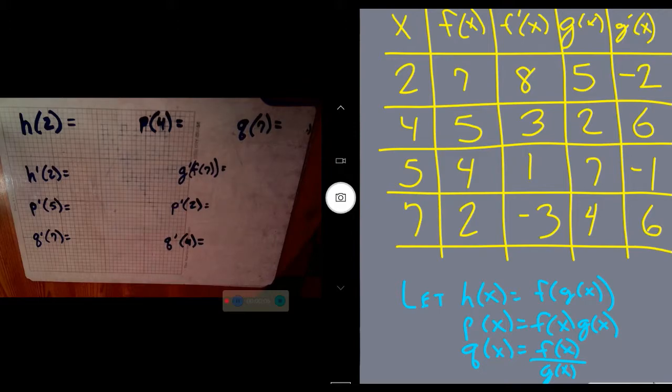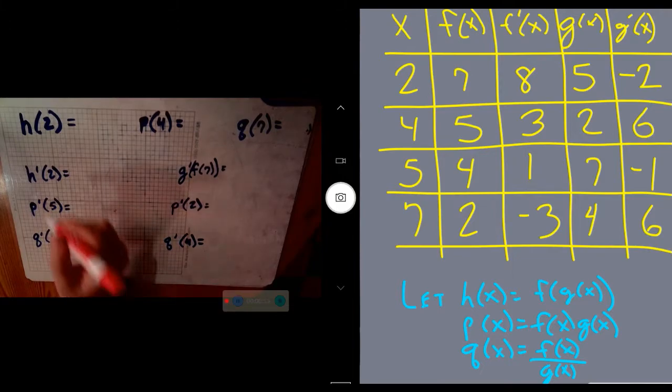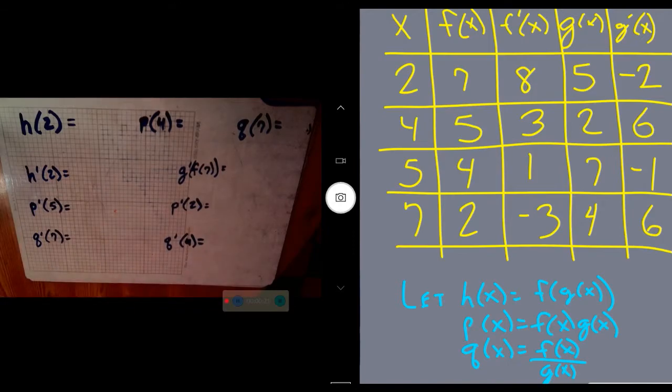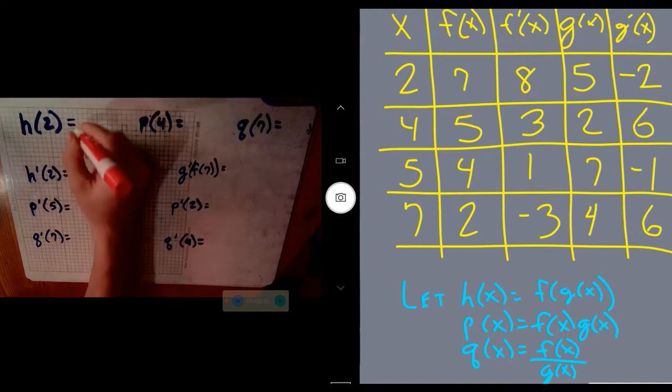All right, we're looking at using tables to find different values of derivatives using various rules. First, we have h, p, and q being defined as they are here: h being f of g of x, p being the product of f times g, and q being the quotient of f divided by g. We can use a table to find these various values.